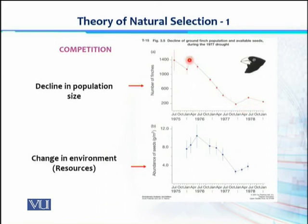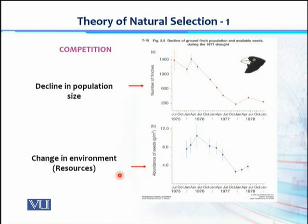The population couldn't recover to its previous level immediately. A large proportion of individuals that had been present in 1977 were reduced. In 1978, when drought conditions improved, the population began to gradually increase again along with gradually increasing resources. This illustrates competition as a driving force responsible for bringing about evolution.